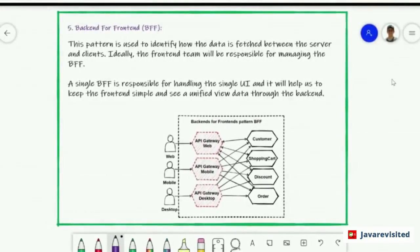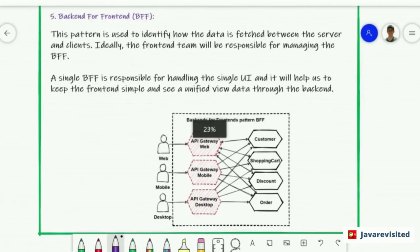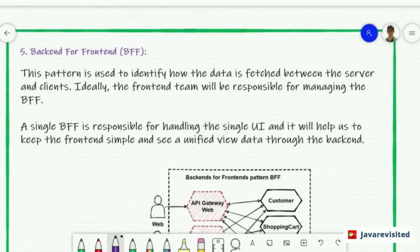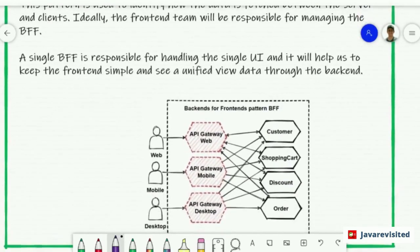Now it's time for the backend for frontend pattern. This pattern is used to identify how data is featured between the server and client. Ideally, the frontend team will be responsible for managing the backend for frontend. A single backend for frontend is responsible for handling the single UI and it will help us to keep the frontend simple and see a unified view of data through the backend.